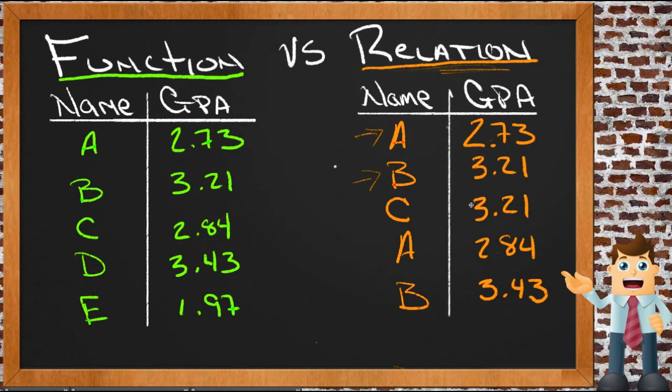Another one C, and another student whose name starts with A and their GPA is 2.84, and then another student whose GPA starts with B and theirs is 3.43. So we can see that there's a couple of duplicates over here and a couple of duplicates over here, but we have associations between each student and their GPA.